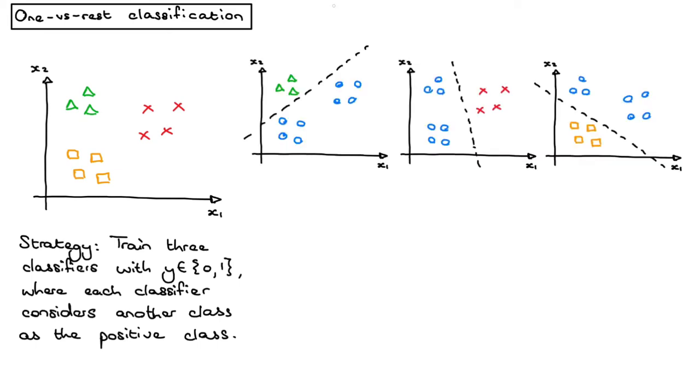Step one is to train three different classifiers. The first is just a classifier for predicting whether something is a triangle or not. The second one is for predicting whether something is a cross or not, and the third one predicts whether something is a square or not.